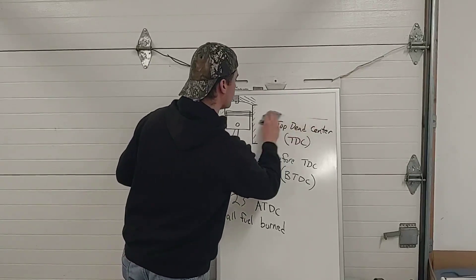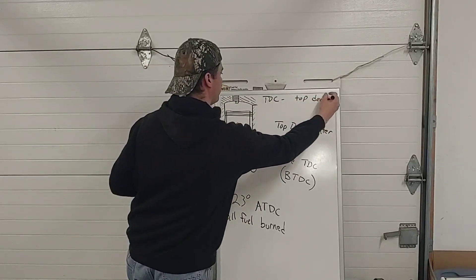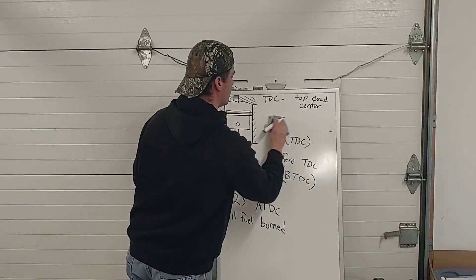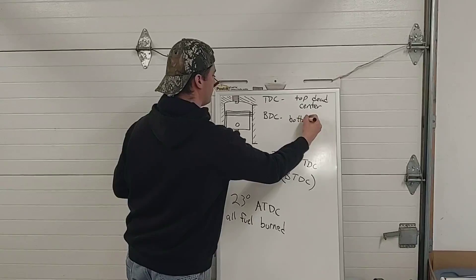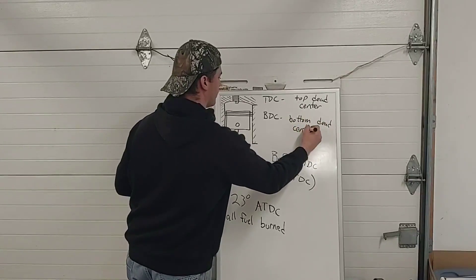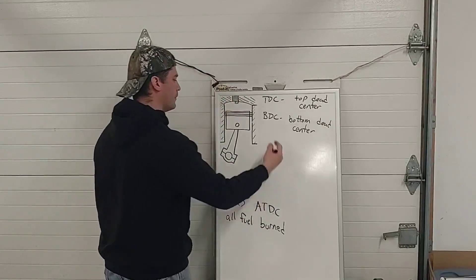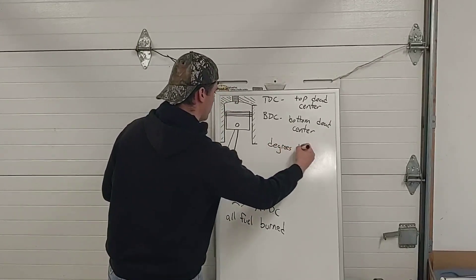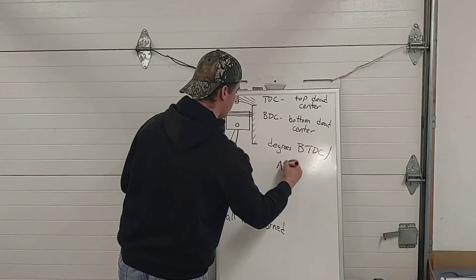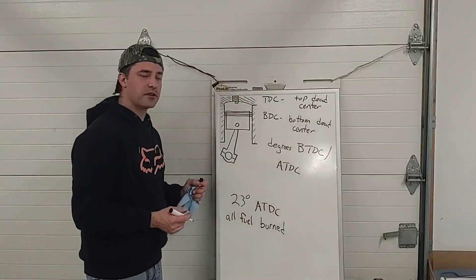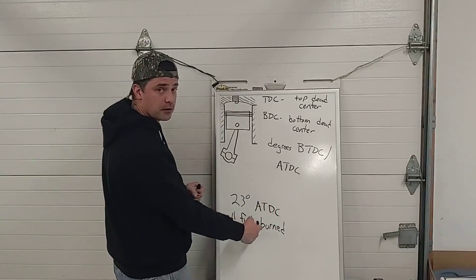For our terms to know: TDC, or top dead center, is when our piston is at its highest. BDC, or bottom dead center, is when our piston is at its lowest. Degrees before top dead center or after top dead center is what we're concerned with as far as ignition timing. At about 23 degrees after top dead center we want all our fuel to be burned at low RPM.